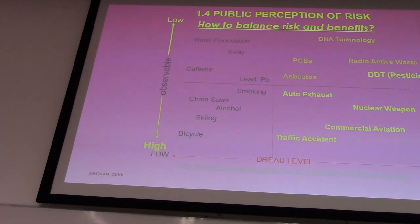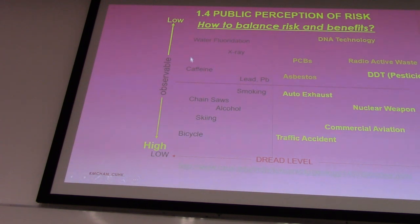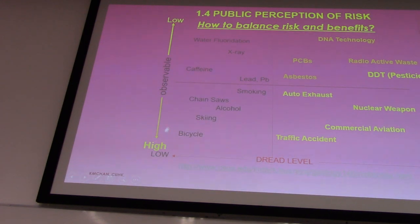Everybody likes sushi, right? So how can we calculate this? We have a formula. Some risks have high observability — like a bicycle accident, if you don't have a helmet you probably hurt your head; or skiing, every year after winter you see many students in North America come back with crutches. That is what we call high observability.